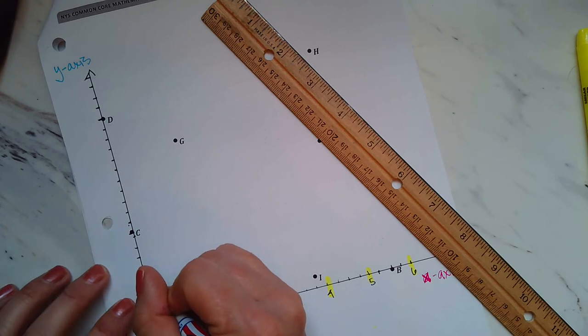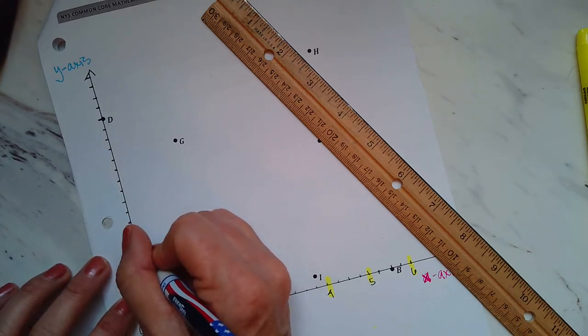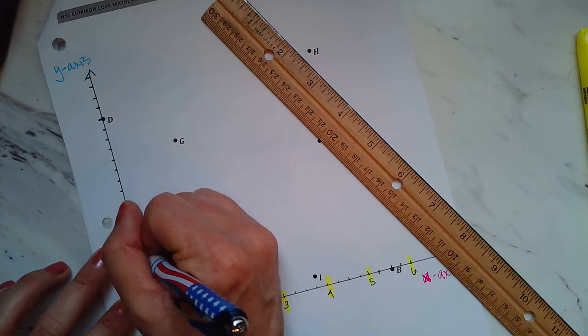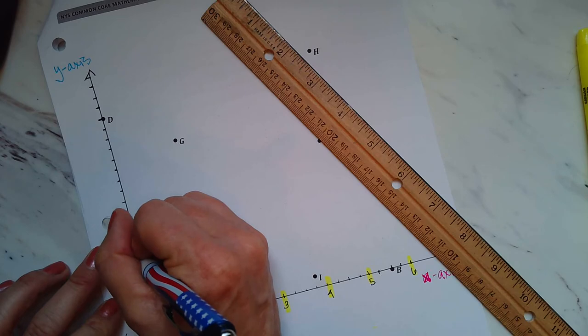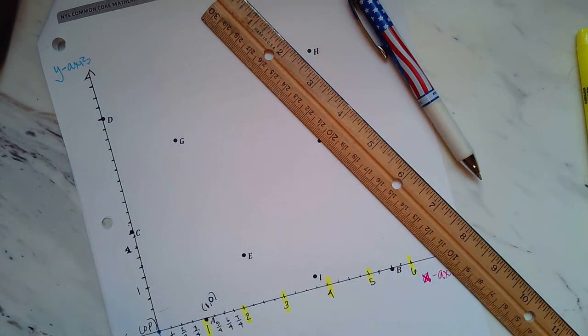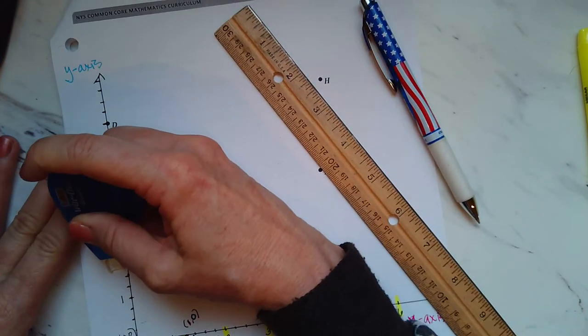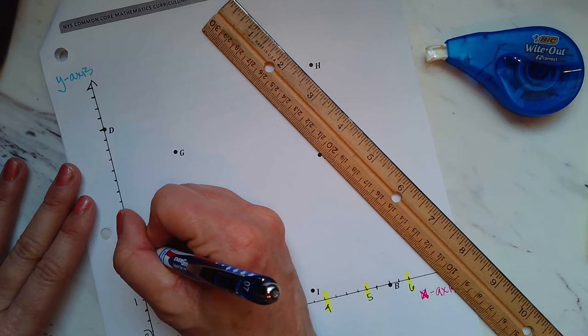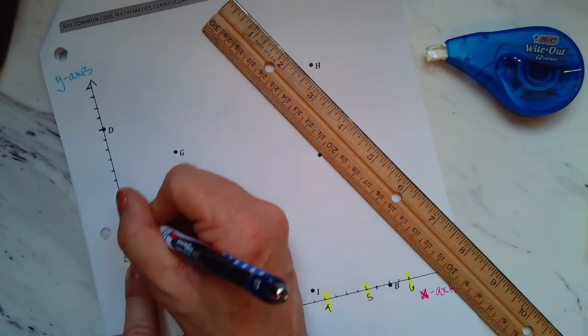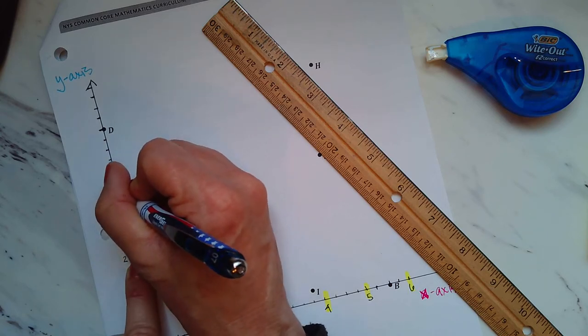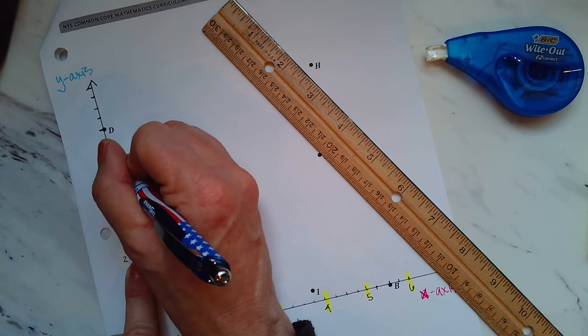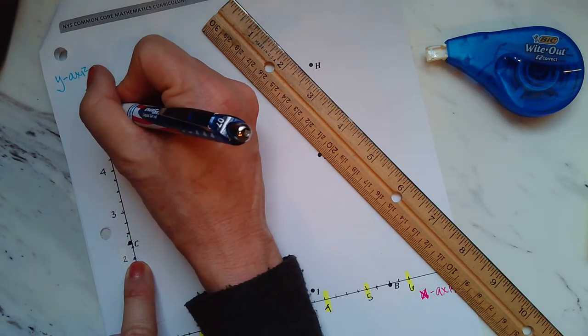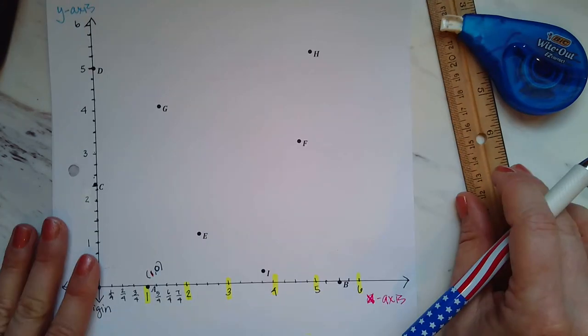If this is one-fourth, two-fourths, three-fourths, four-fourths, one. Then one-fourth, two-fourths, three-fourths, four-fourths. This would be eight-fourths. Oh, that is two. Let me fix that so it doesn't confuse you. So every four marks, this would be two and a fourth, two and a half, two and three-fourths, three. Three and a fourth, three and a half, three and three-fourths, four. Four and a quarter, four and a half, four and three-fourths, five. Five and a fourth, five and a half, five and three-fourths, six.